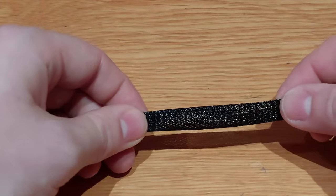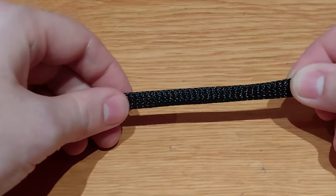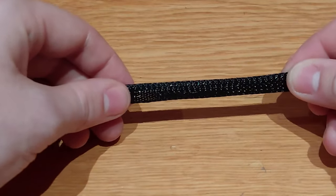The next thing you need is cable sleeve. As you can see when I compress it, it expands in the other direction. This is the behavior you need for a pneumatic muscle.